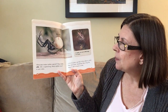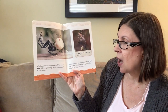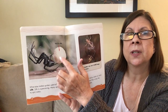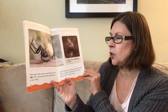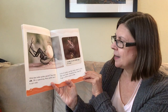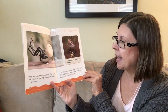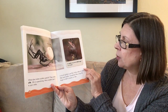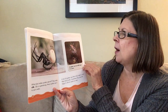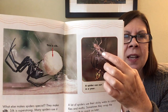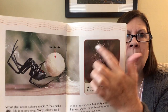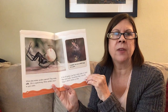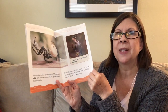What else makes spiders special? They make silk. Silk is super strong, and many spiders use it to spin webs. The spider has a big ball of silk and that's how they spin their webs — they make it with their bodies. A lot of spiders use their sticky webs to catch flies and moths. Sometimes they wrap the bugs in silk to snack on later. A spider can eat 2,000 bugs in a year!